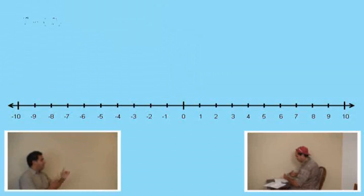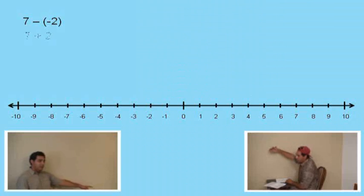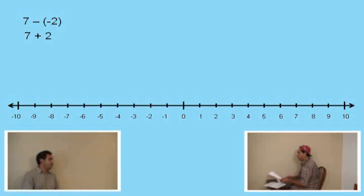Charlie, here we go. 7 subtract negative 2. What is it, Charlie? 7 plus 2. It's the same as 7 plus 2. Very good. And 7 plus 2 is 9, right? Right. It's that first step. That's the hard part.